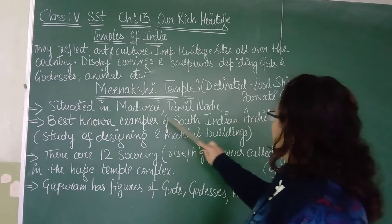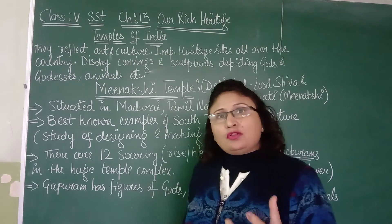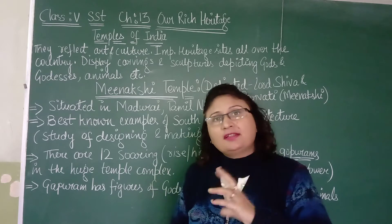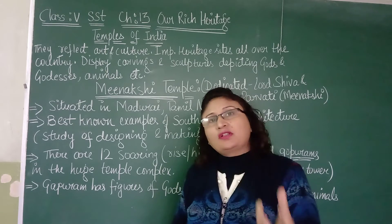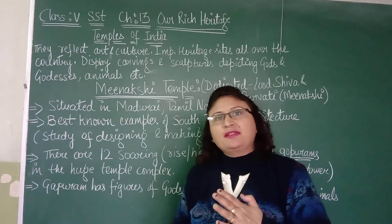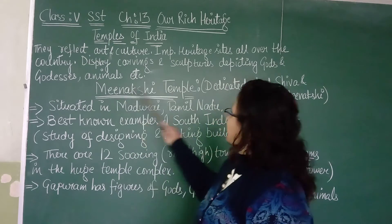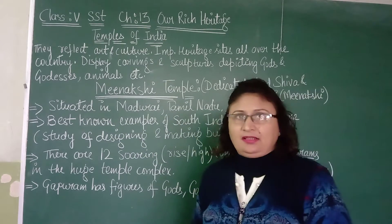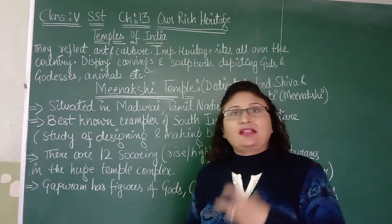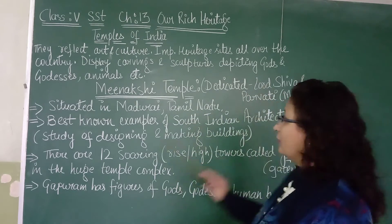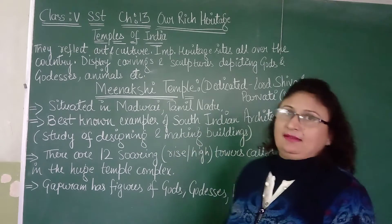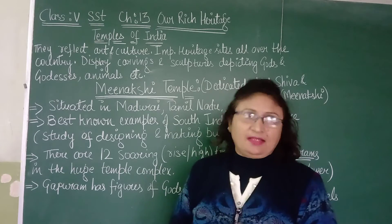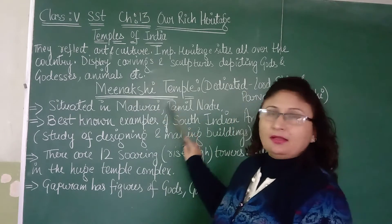It is one of the best known examples of South Indian architecture. There is a difference between North Indian temples and South Indian temples — their designs are different. Architecture is the study of designing and making buildings. So Meenakshi temple is a good example of South Indian architecture.